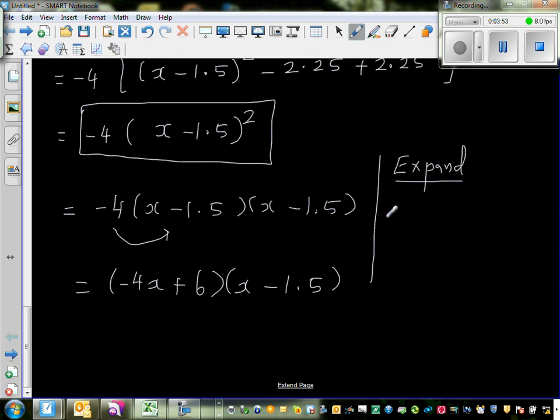This is -4x times x, which is -4x². -4x times -1.5 is +6x, and +6x again, which is +12x. And 6 times -1.5 is -9. So the question was -4x² + 12x - 9.